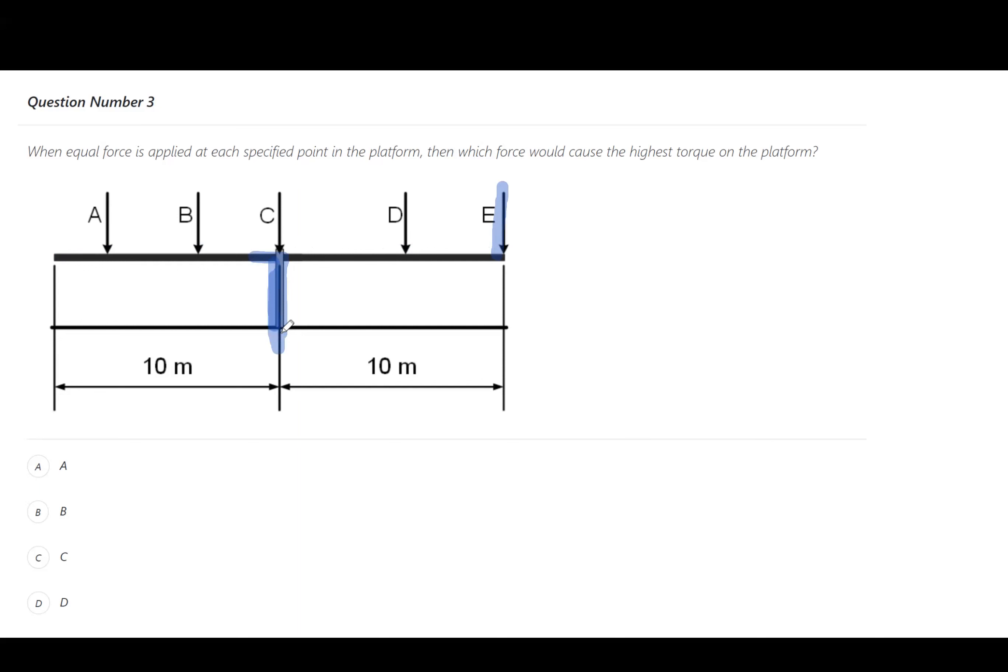Followed by A, then D, then B, and C would actually have no torque because it's perfectly in the center there. It wouldn't cause it to turn at all. So the answer to this one would be E.